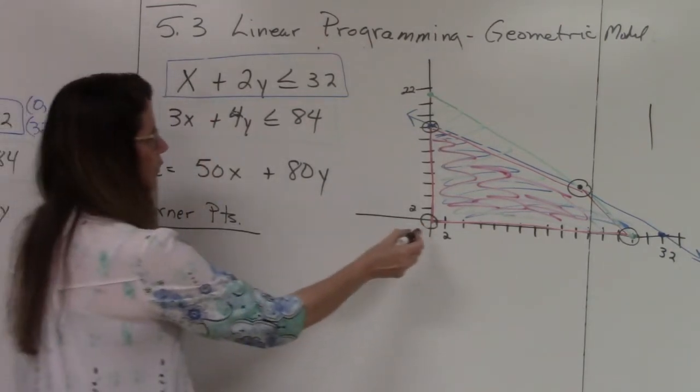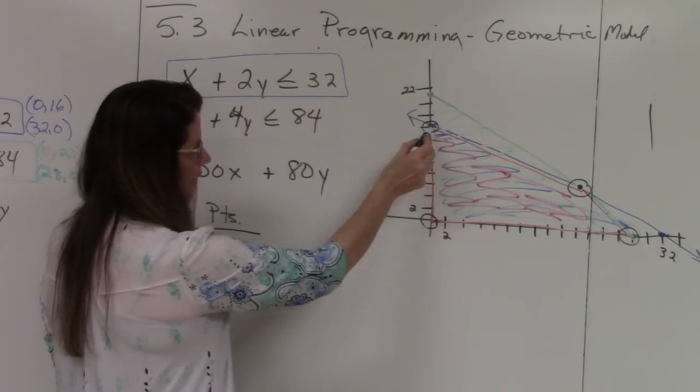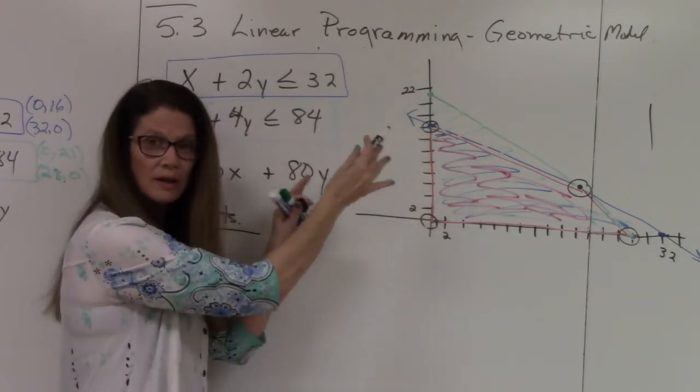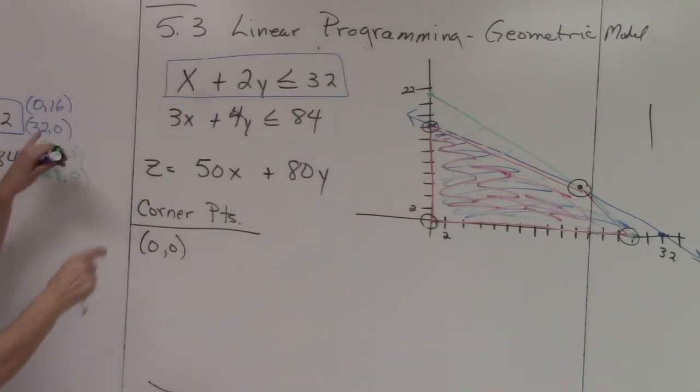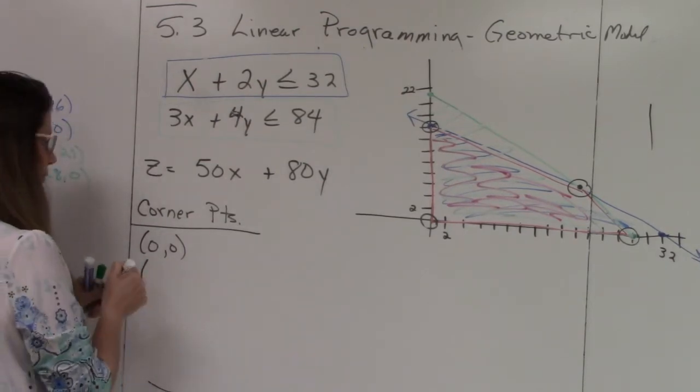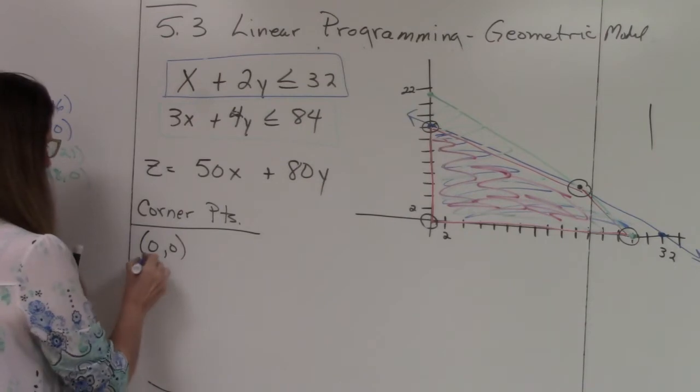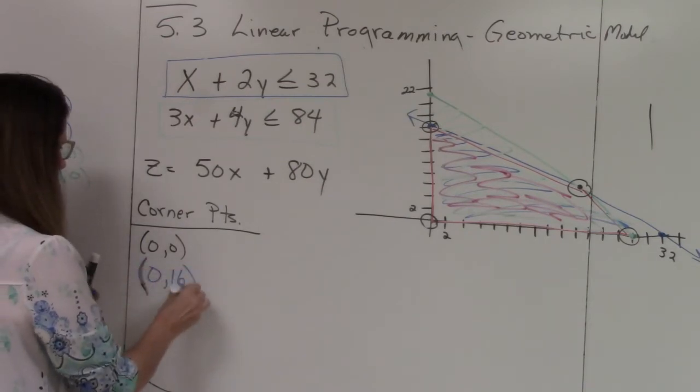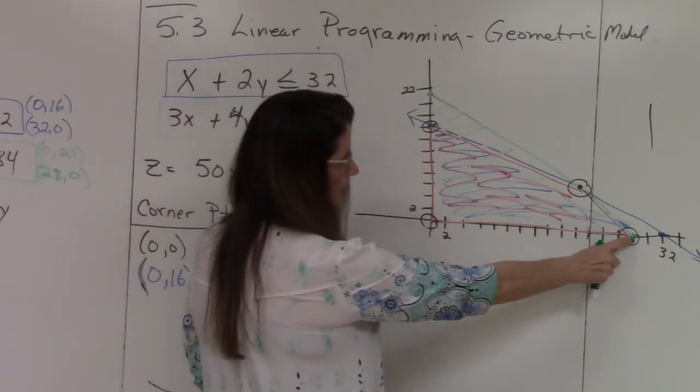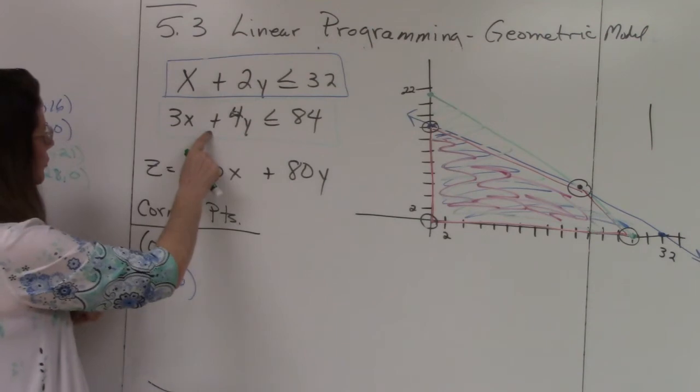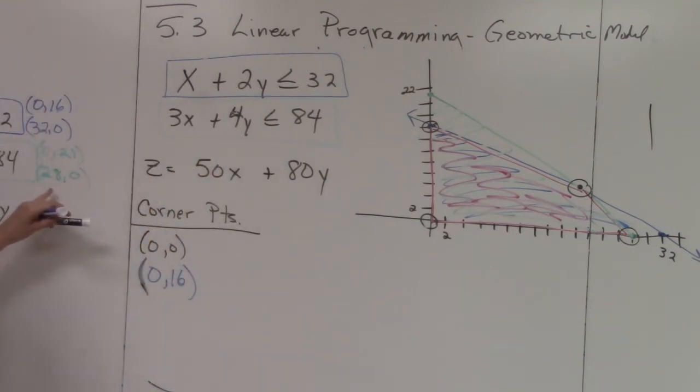We know this is 0,0. It's a corner point. We know this is the y-intercept of the blue line. So this is why you want to keep it color coordinated. Y-intercept of the blue line. So that's this one. So the y-intercept was 0, 16. So that is another, I'm going to put it in blue so that we know it. So this is 0, 16. This one down here is the x-intercept of the green line. This is the green line. And we're looking for the x-intercept. And I have them written off camera for you. So the x-intercept of the green line was 28, 0.